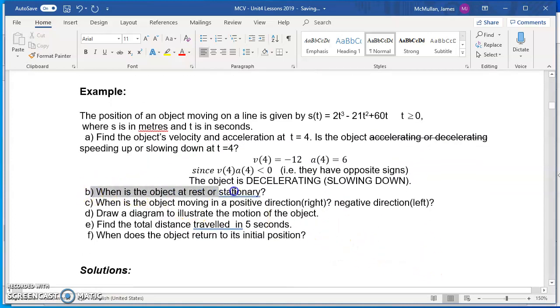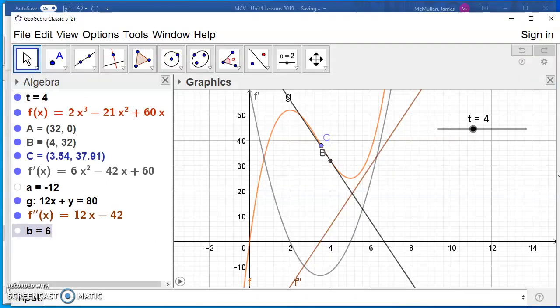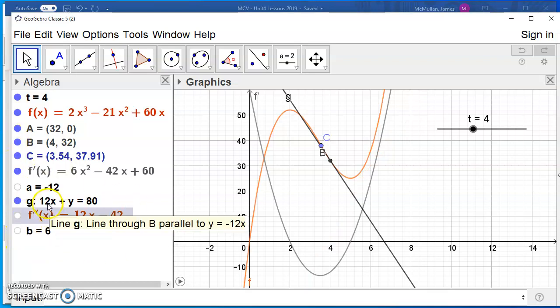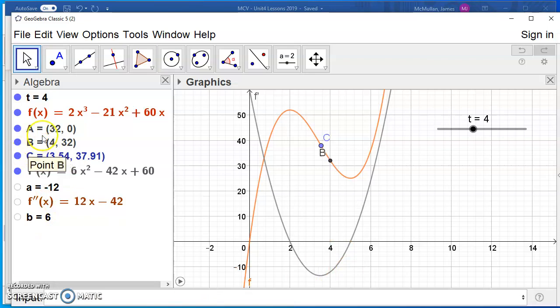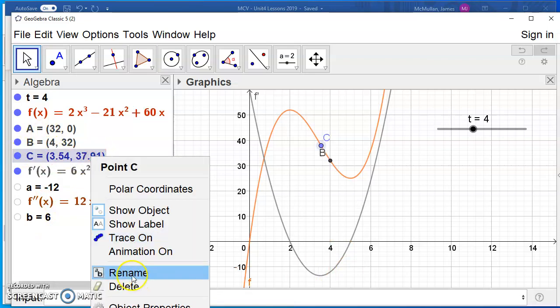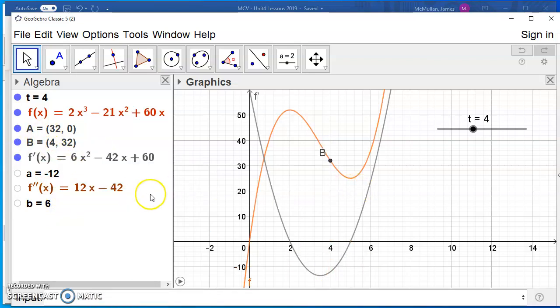So this object is traveling at negative 12 meters per second, but it's accelerating at positive 6 meters per second squared. So this object is slowing down at this moment. Let's just write this down and get this clarified. So we'll first write this down. So v of 4 is equal to negative 12. That's what we found.